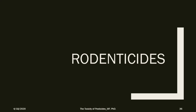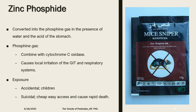Now moving to the last group: rodenticides. Starting with zinc phosphide, commonly used commercially — available in dark gray powder or pellets. After ingestion of metal phosphides, phosphine gas, which is the active ingredient, is released due to contact with moisture or hydrochloric acid in the stomach. This gas is absorbed into the bloodstream through the stomach and intestine and is captured by the liver and lungs. Phosphine gas produces various metabolic and non-metabolic toxic effects by combining with cytochrome c oxidase enzyme, leading to cellular death.